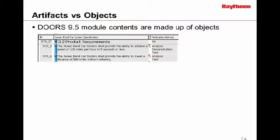Likewise, there's an object heading. Object number SIS 27 is a section heading — you can see it's bold and it's got a number. In a DOORS 9 module, you can clearly distinguish between a section heading and an object within it. But unless you're using attributes, that's about all you can do in terms of distinguishing things.